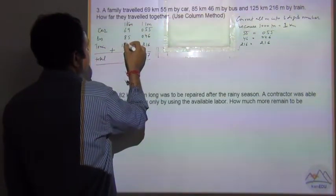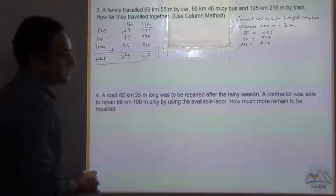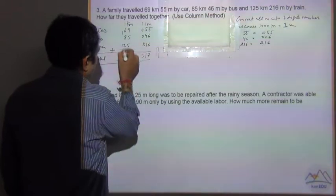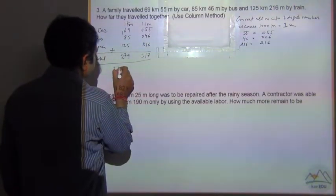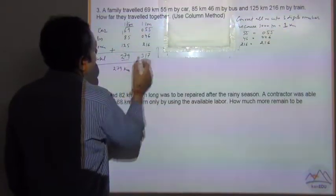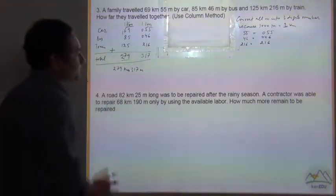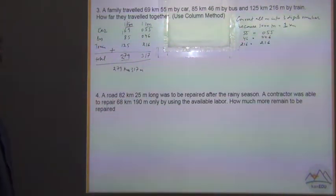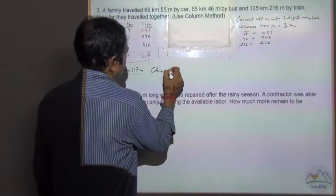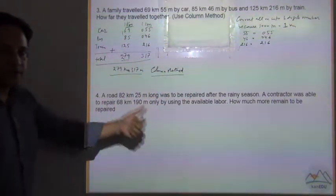8 plus 2, 10 plus 6, 16 plus 1, 17. So this is equal to 279 km and this is equal to what? Meter. So 317 meter. So this is called the column method. So this can be used for addition and for subtraction also.